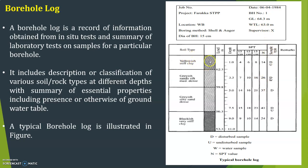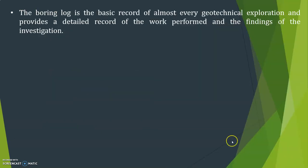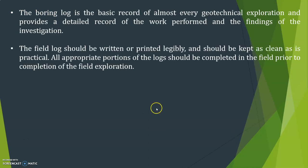In the borehole log, soil types and sample notations are recorded: D is disturbed sample, U is undisturbed sample, W is water sample, and N is SPT value. The boring log is the basic record of almost every geotechnical exploration and provides a detailed record of the work performed and findings of the investigation. The field log should be written legibly and kept clean. All appropriate portions of the log should be completed in the field prior to completion of the field exploration.